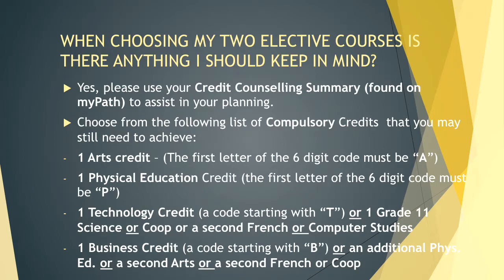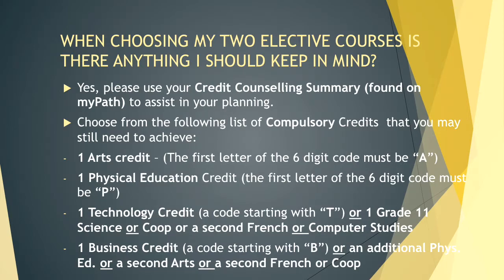When choosing your two elective courses, you should look at your credit counselling summary on MyPath to help assist you in your planning. Choose from the following compulsory credits you may still need: one arts credit, one phys ed, a tech credit or grade 11 science, co-op, second French or computer studies, and one business credit or an additional phys ed, second art, second French, or co-op — all required for your Ontario Secondary School Diploma.